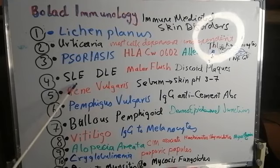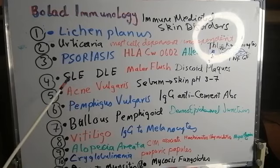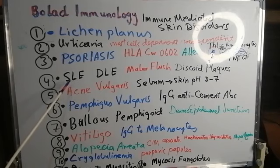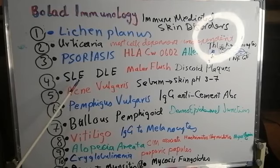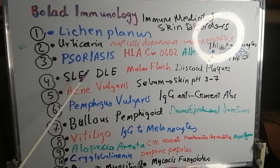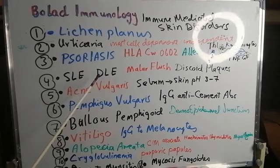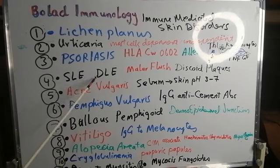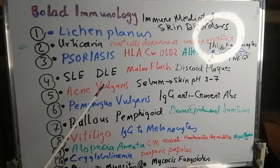Systemic lupus erythematosus may be associated with a skin disorder in the form of butterfly pigmentation or malar flush. It is due to deposition of immune complexes. There is also a localized form known as discoid lupus erythematosus, which leads to a well-circumscribed, well-demarcated discoid skin lesion that is not systemic.